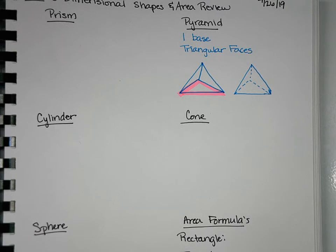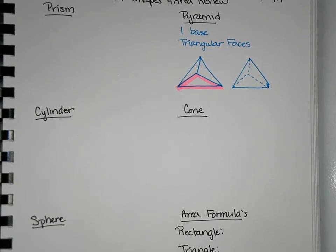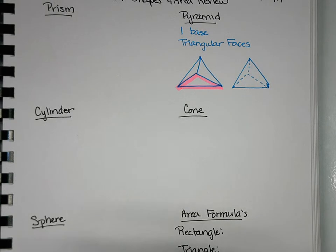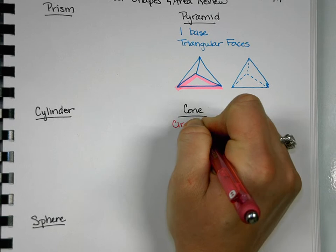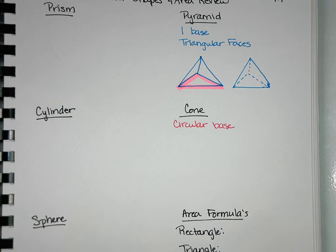Okay. So what was another one that you guys said you knew? Cone. Here's a cone. What is special about a cone? The base is a circle. So it's got a circular base. Does it have any faces? No. No, because it's round.